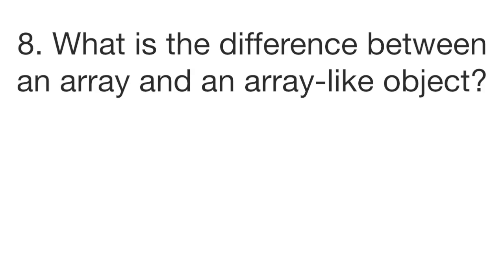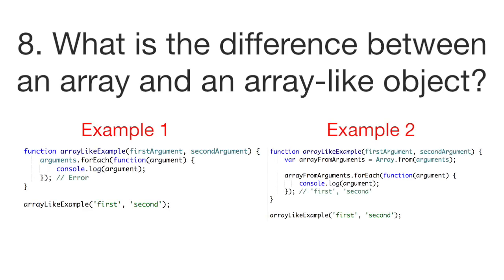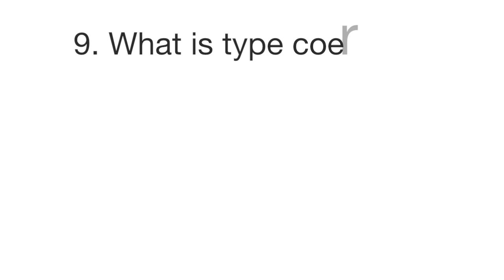Question number eight: what is the difference between an array and an array-like object? An array-like object does not have the standard array methods, but an array can be created from it with Array.from(). In the first example the arguments variable is an array-like object, and when we try to use the forEach method we get an error. In the second example we create an actual array from the array-like arguments variable, so the forEach method works.